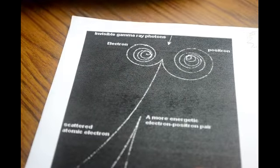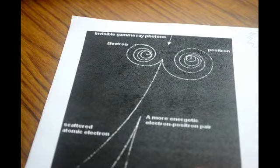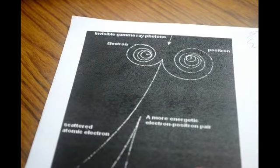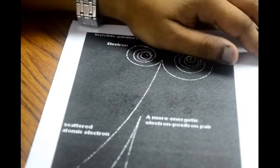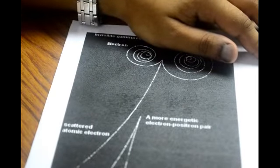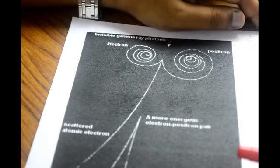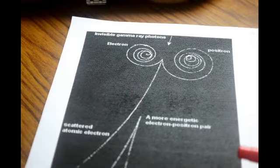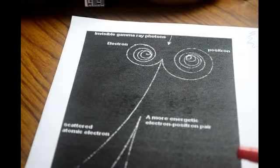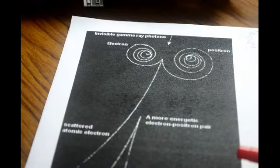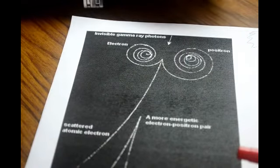It later turned out that the Dirac equation described electrons, and so we must have something called an antielectron. Now, an antiparticle — and there have been lots of myths about antiparticles — is really a particle which has opposite charge. It is the same mass, it is the same spin, it is the same everything except the charge. Of course, some particles can be their own antiparticle. For example, a photon is its own antiparticle because it is neutral. Neutrons, however, are not their own antiparticles because they are fermions and they have an internal structure.